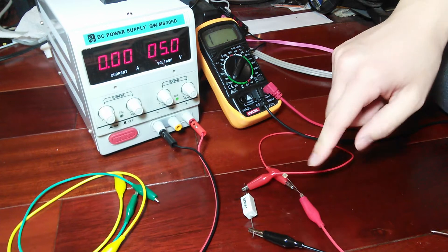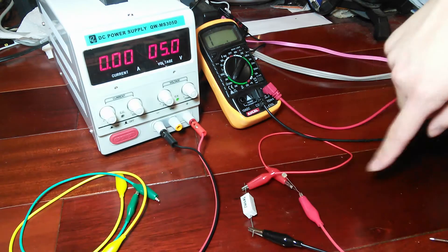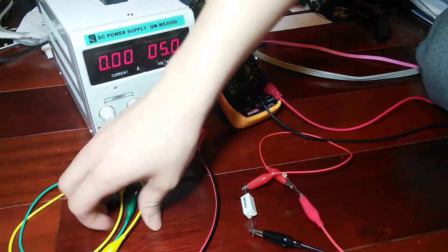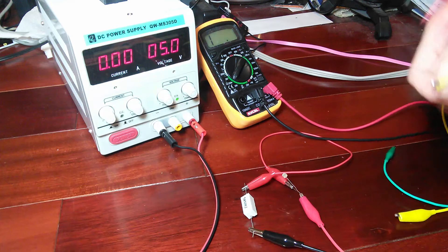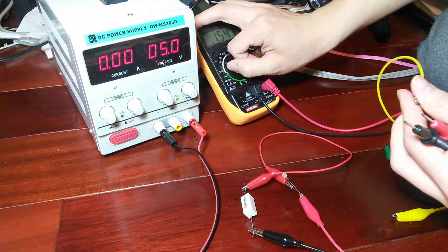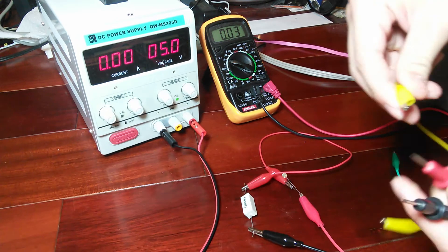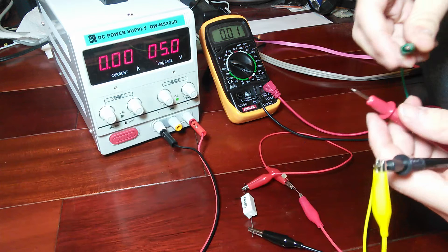Now, the cool thing is we can measure the individual voltage drops of each resistor. So, let's take our multimeter probes and I'm going to change this back to voltage mode. I'm going to hook an alligator clip to each of the probes.